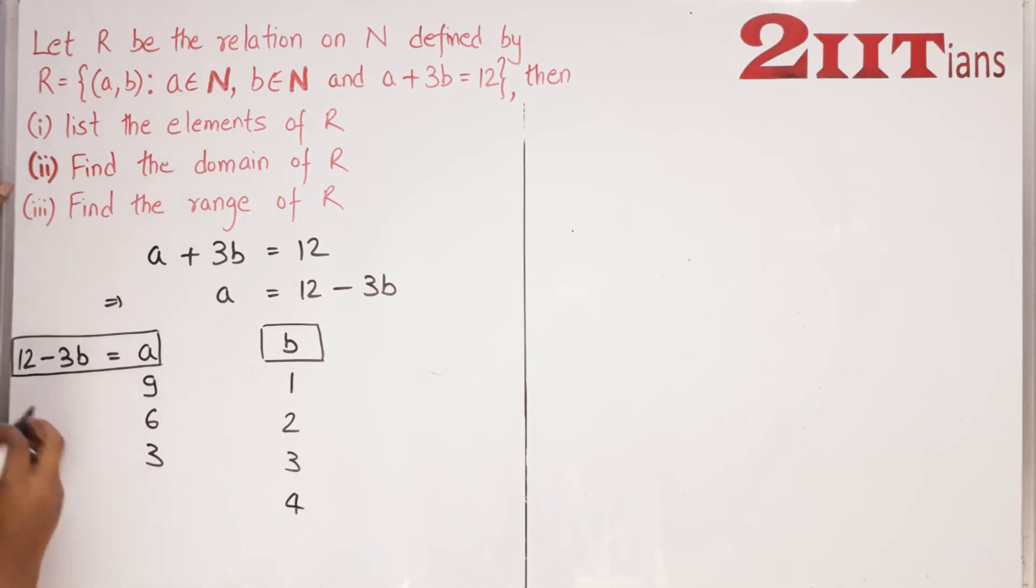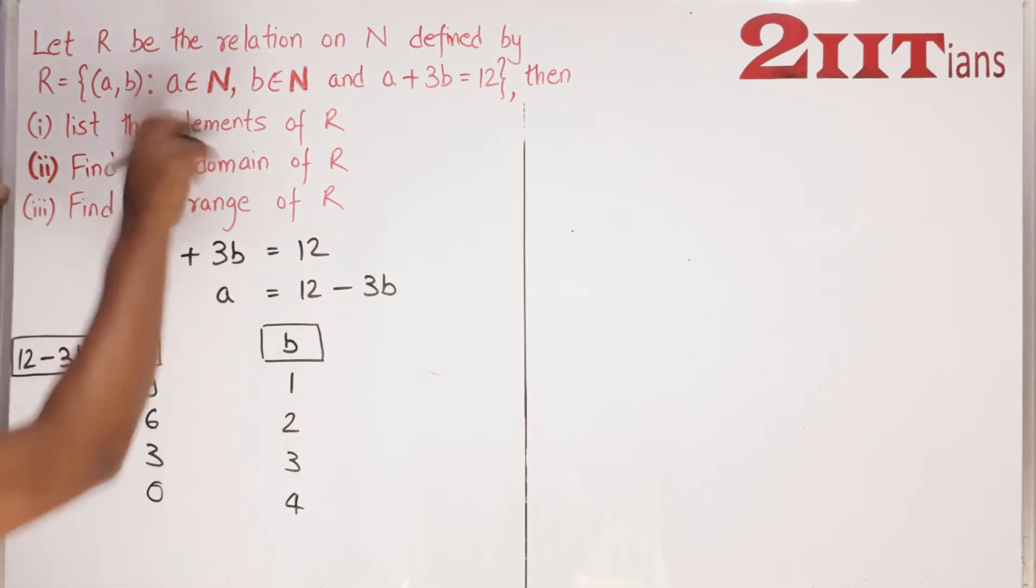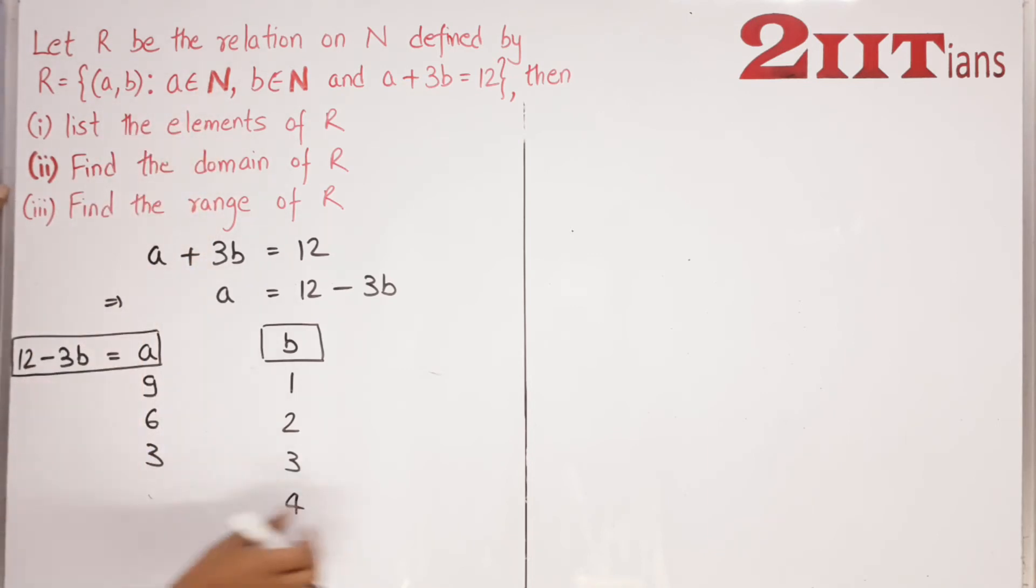After that, if you take B's value as 4, then A's value becomes 0. But A's value cannot be 0 because A is a natural number. So we won't consider this case.